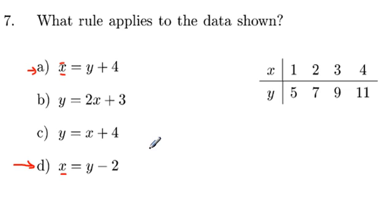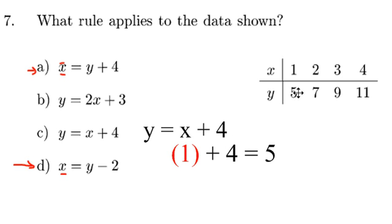So this is c right here, y equals x plus four. I'm going to substitute one in for x because that's what the one is. It's supposed to be five. One plus four is five, so that works out. Now I'm going to go to two and substitute that in. Two plus four is six and it's supposed to be seven.